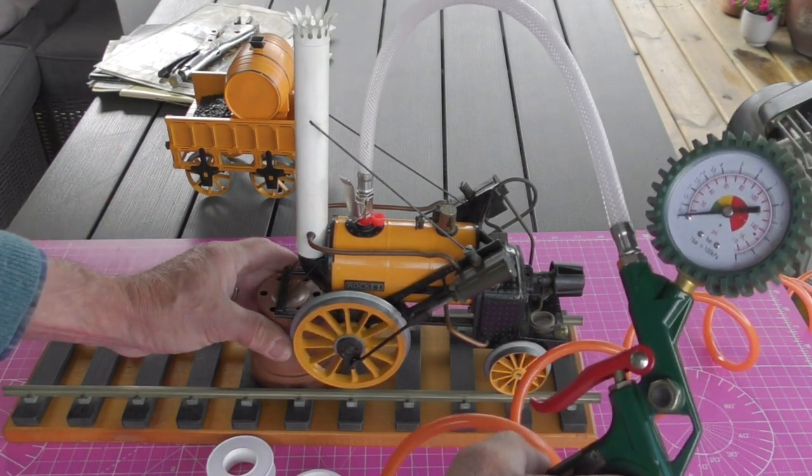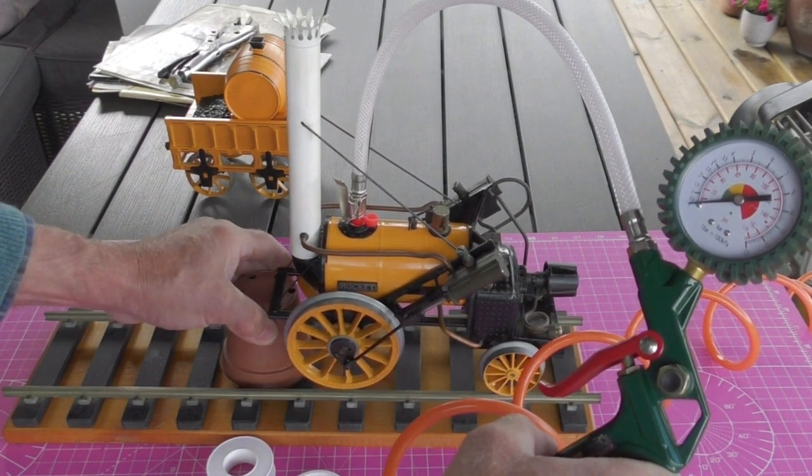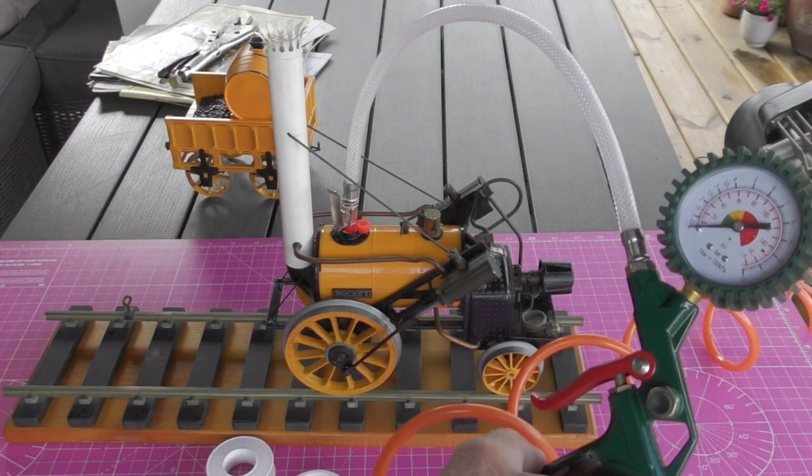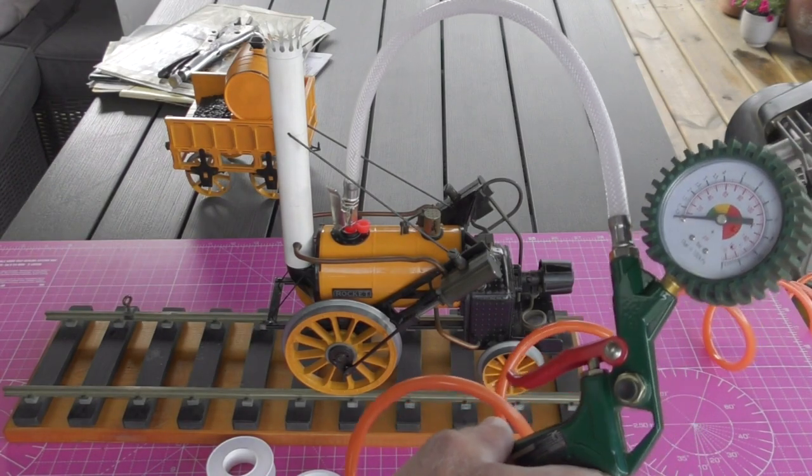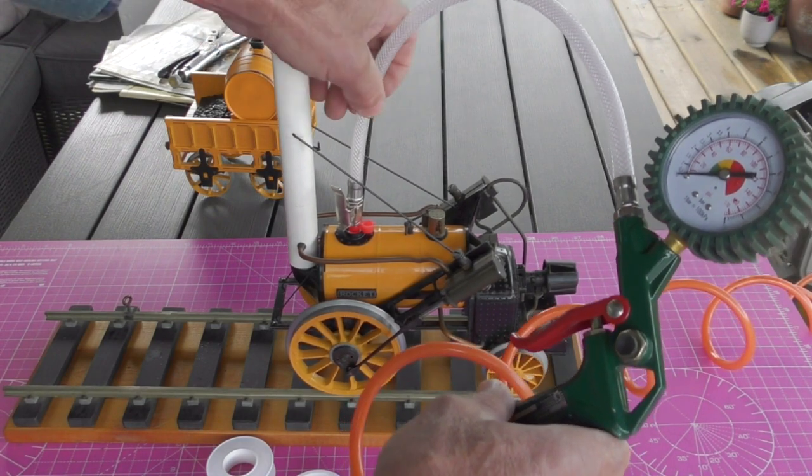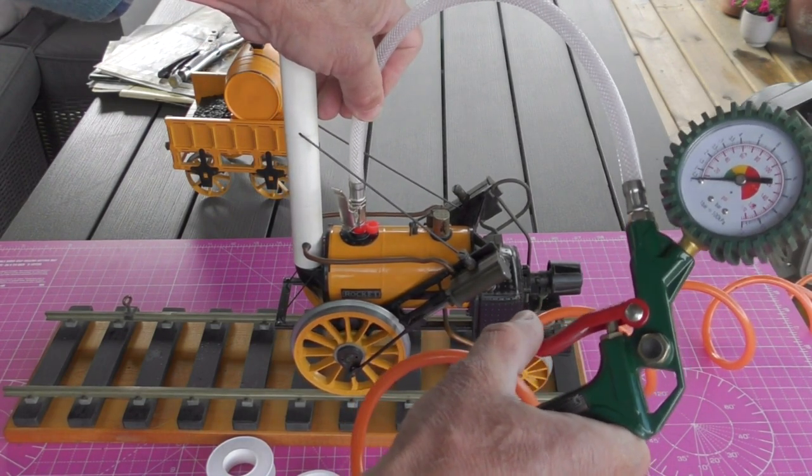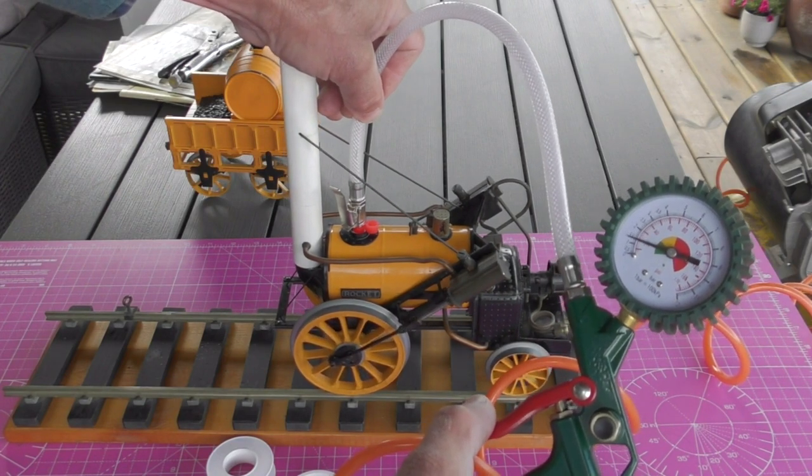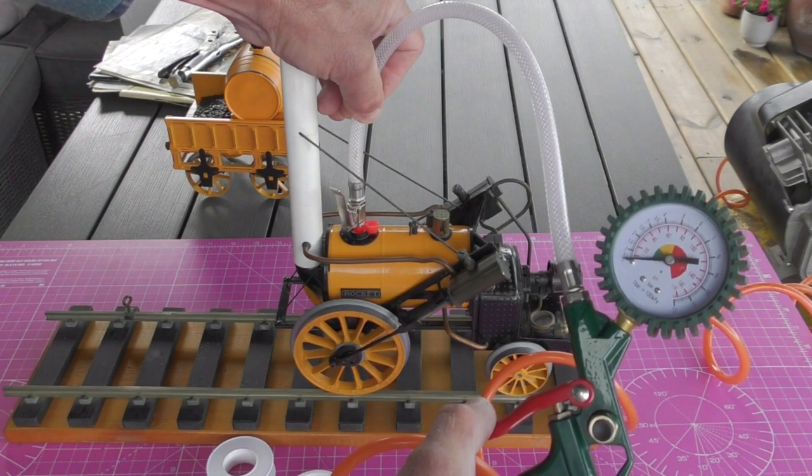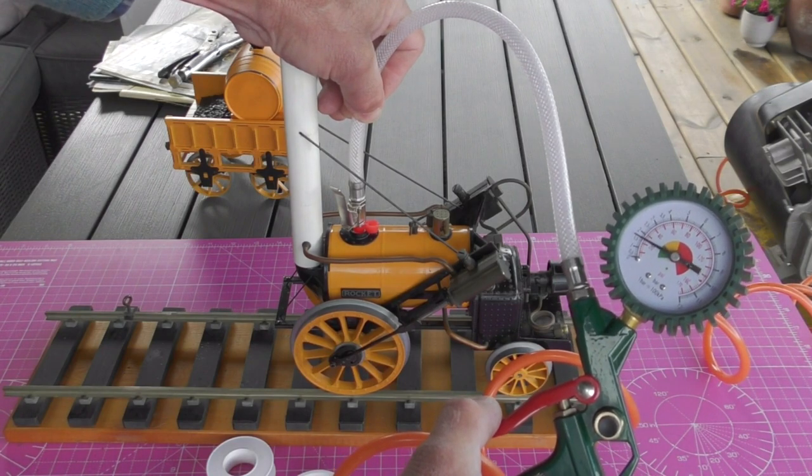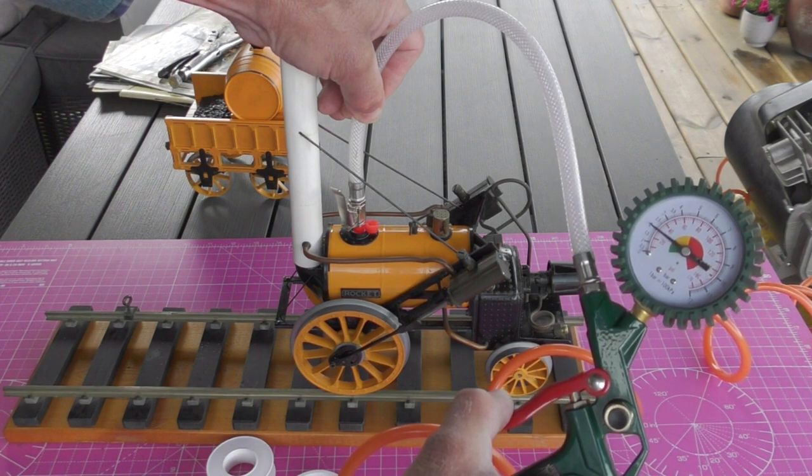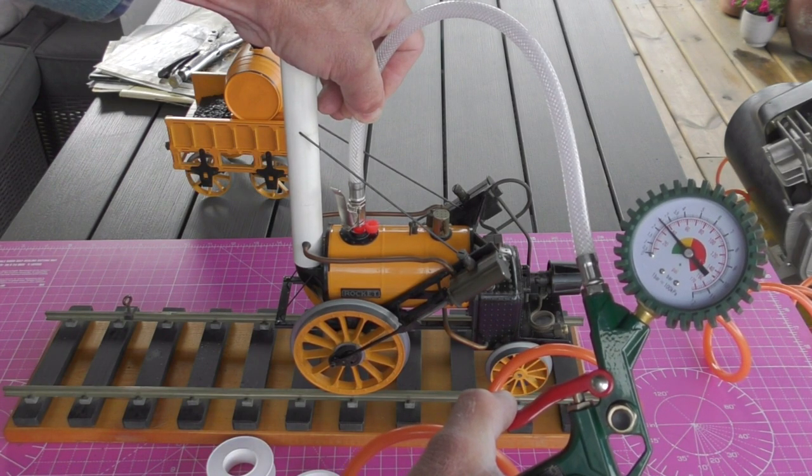I'm not going to go any faster than that. I reckon this thing will, as I thought, perhaps go like the clappers when it's under steam. But I'm slightly worried because I've got a little bit of excessive pressure going in. According to my gauge, which isn't perhaps that accurate, I've got 20 psi going in there and there doesn't appear to be any blow off from the safety valve.